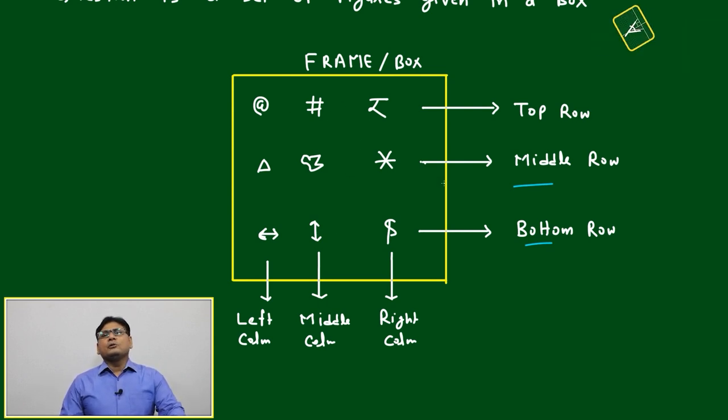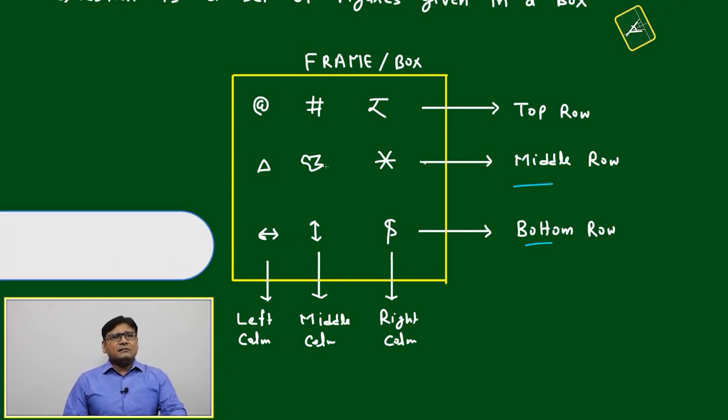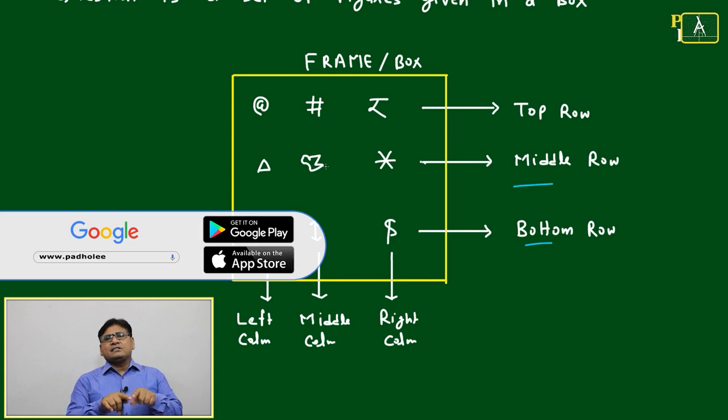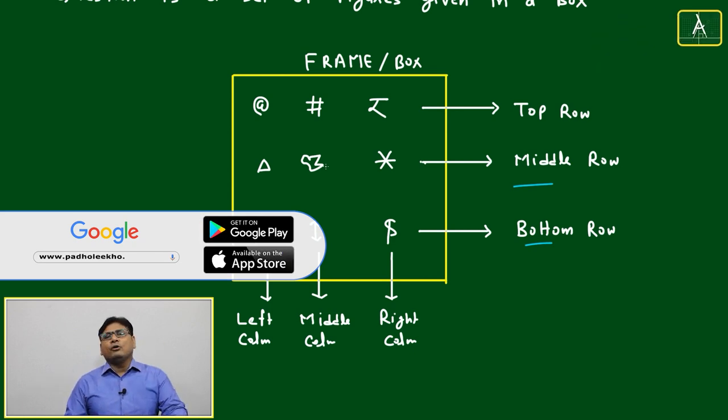But sometimes it may be only two columns or two rows, or sometimes it will be three by three, or sometimes it will be different shape. We can't expect it will always be in this shape, but this is one of the standard ones. Frame will be there, a square shape with three rows and three columns.